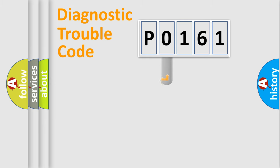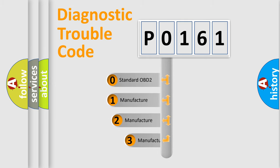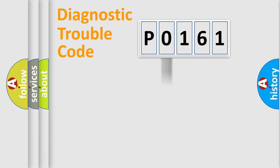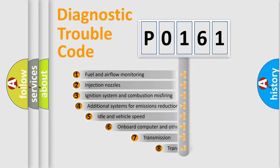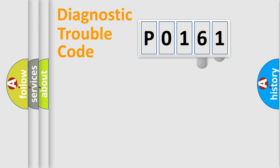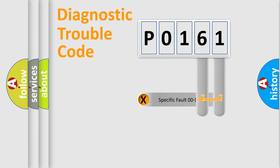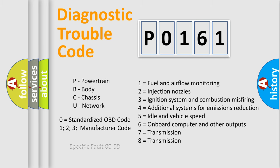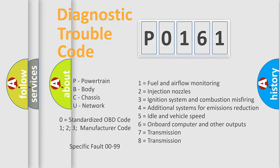This distribution is defined in the first character of the code. If the second character is expressed as zero, it is a standardized error. In the case of numbers 1, 2, or 3, it is a more specific car-manufacturer error. The third character specifies a subset of errors. The distribution shown is valid only for the standardized DTC code. Only the last two characters define the specific fault of the group, and this division is valid only if the second character code is expressed by the number zero.